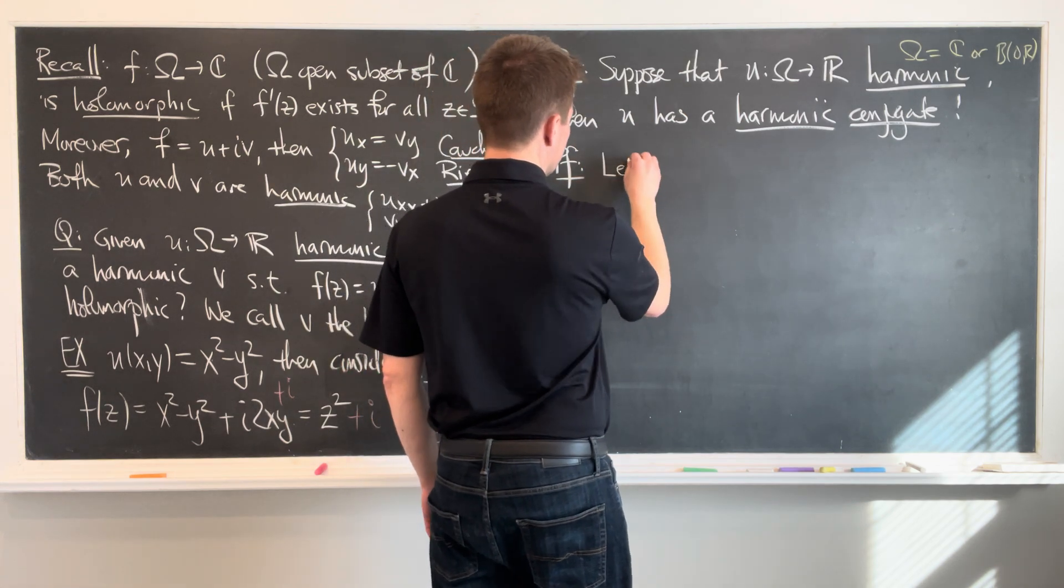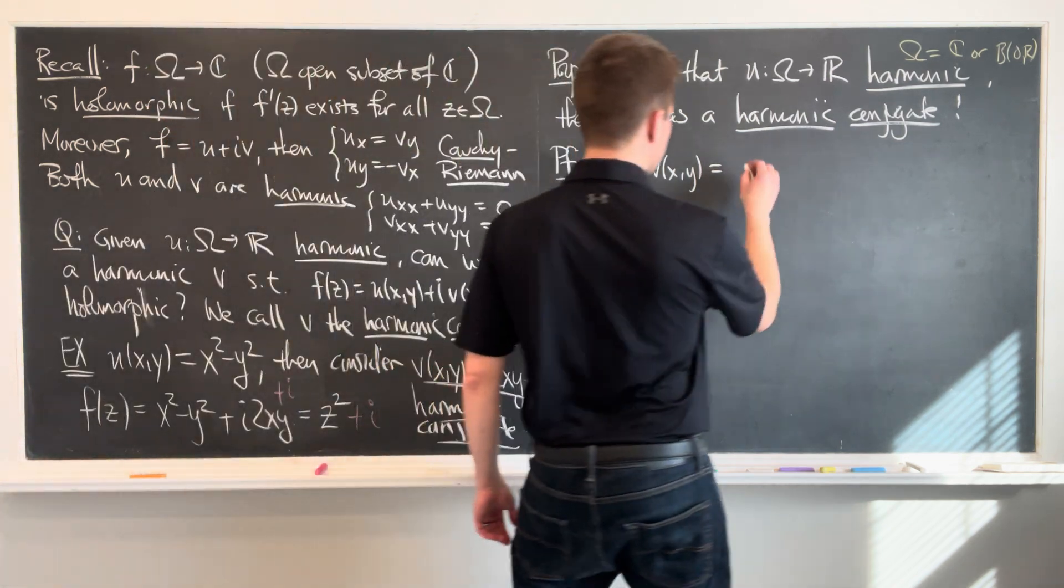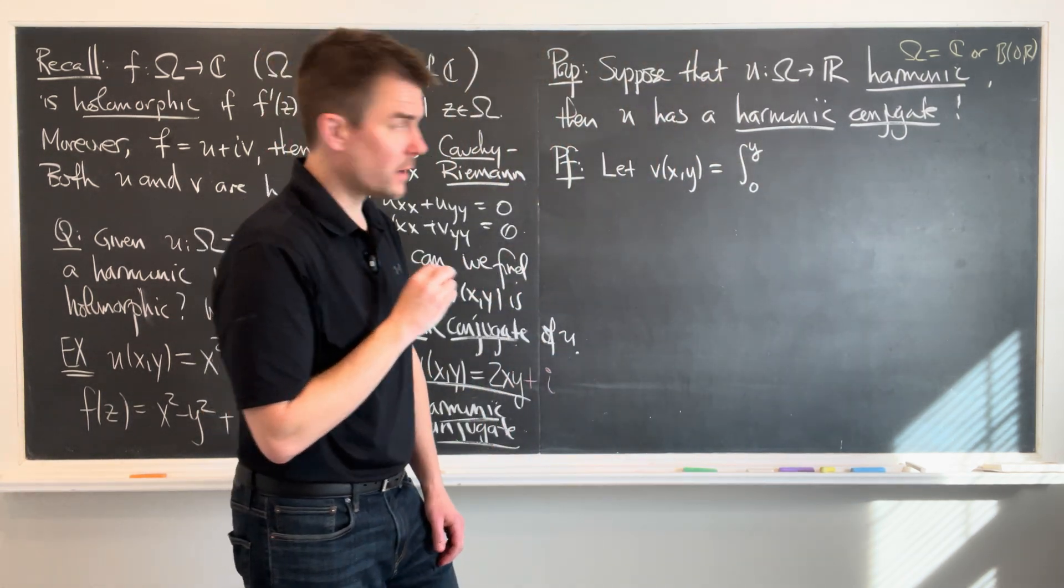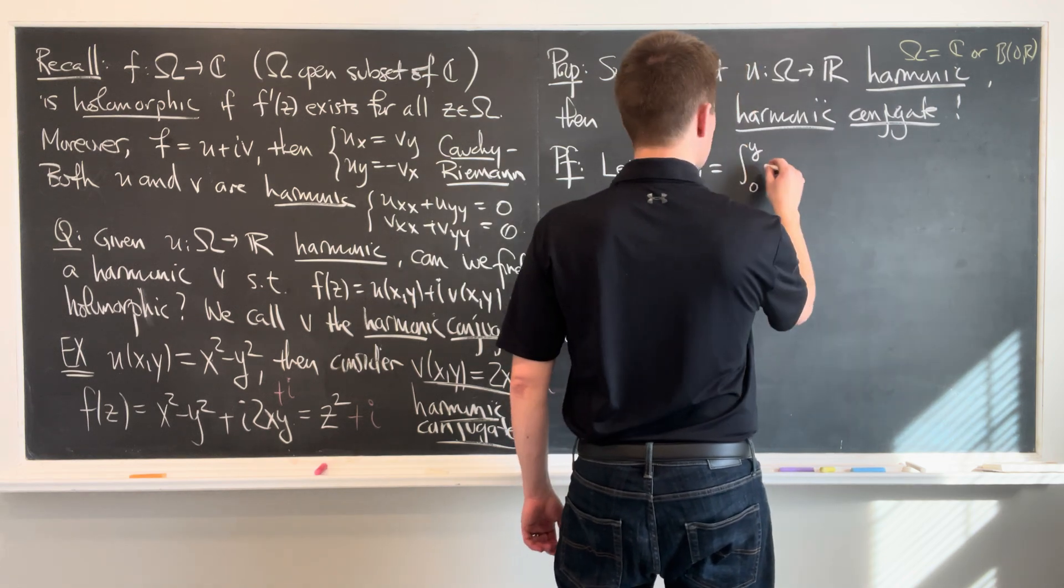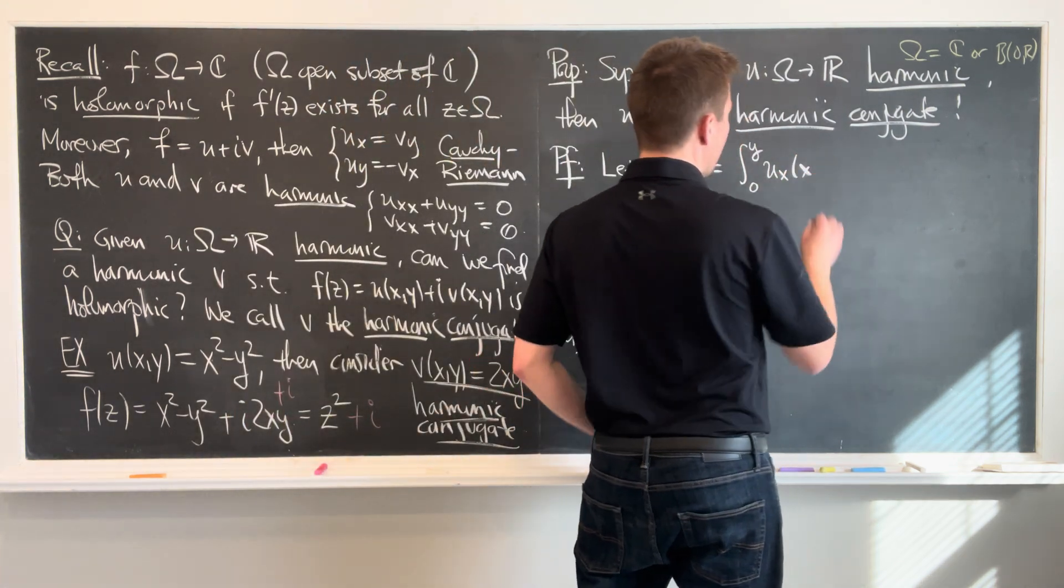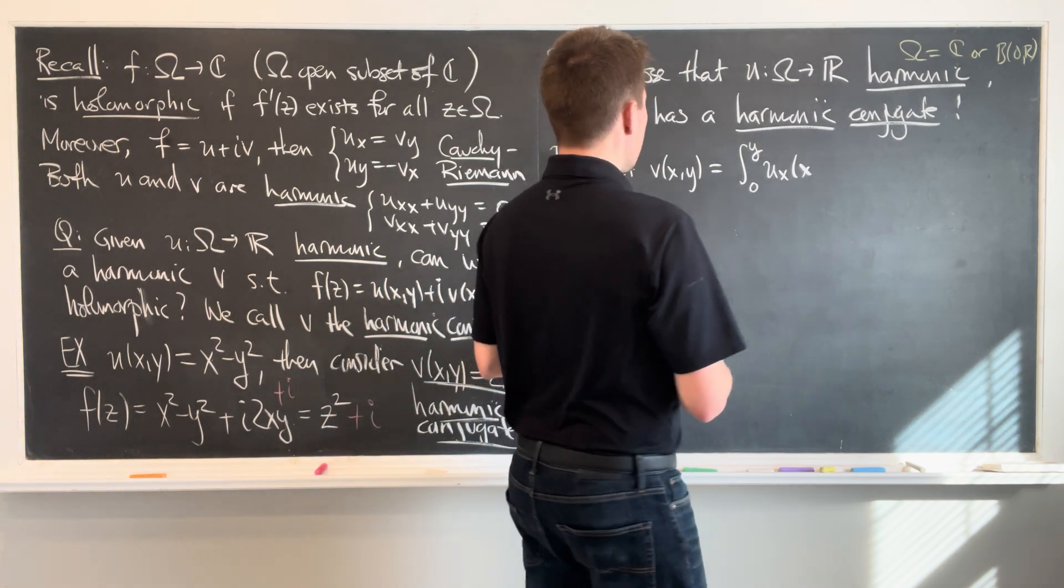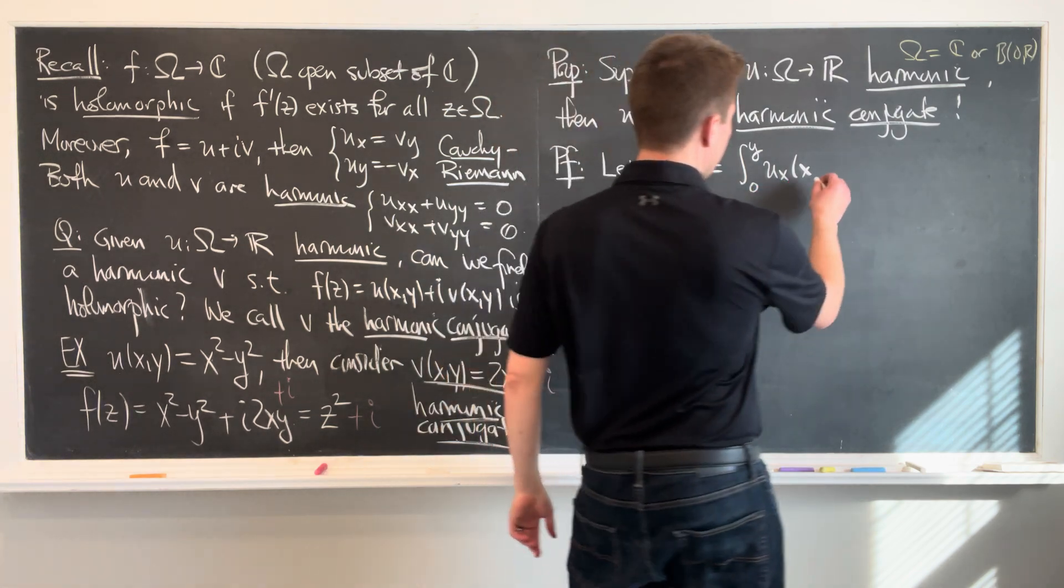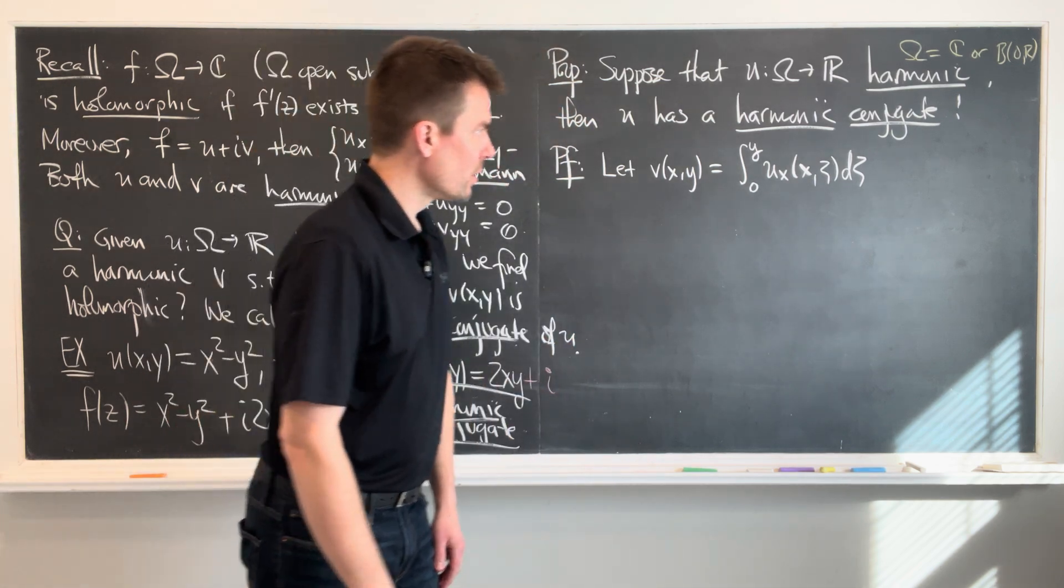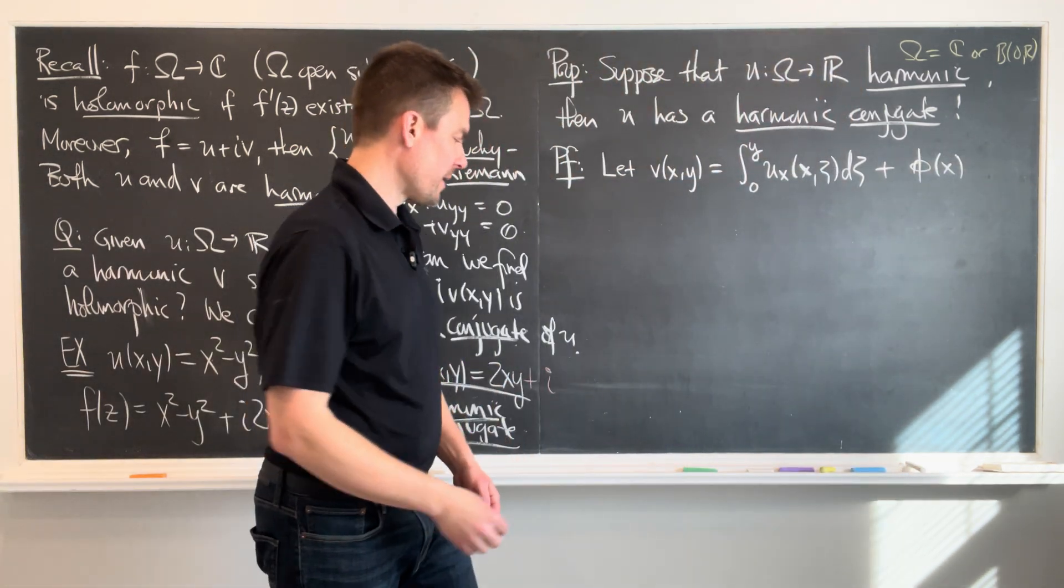I'm going to let v of x and y be the integral from 0 to y of ux, the partial derivative of u with respect to x, evaluated at the point x zeta d zeta. Now if you don't like this notation over here, if you think the notation is too clumsy, then what you can do is you can replace it with like a 1 to denote partial derivative. And then plus some parameter function over here. I'm going to call parameter function phi of x. And I'm going to choose this later.